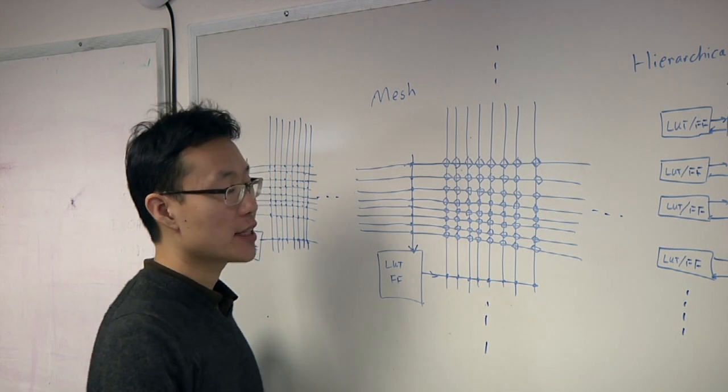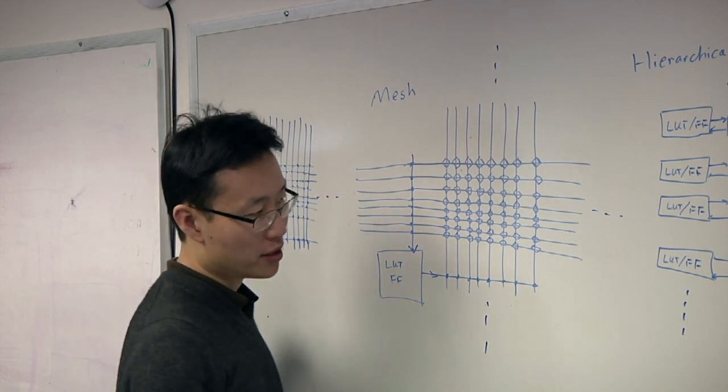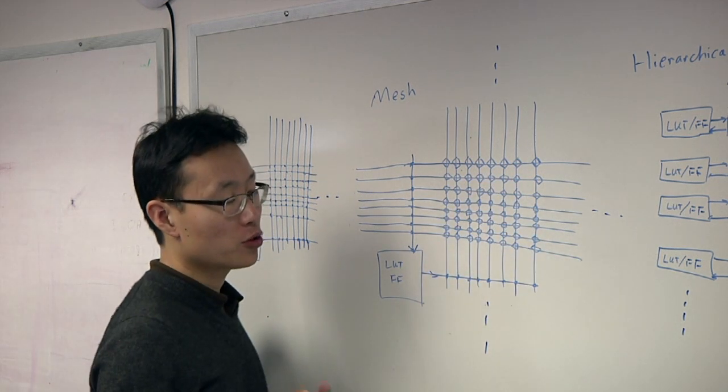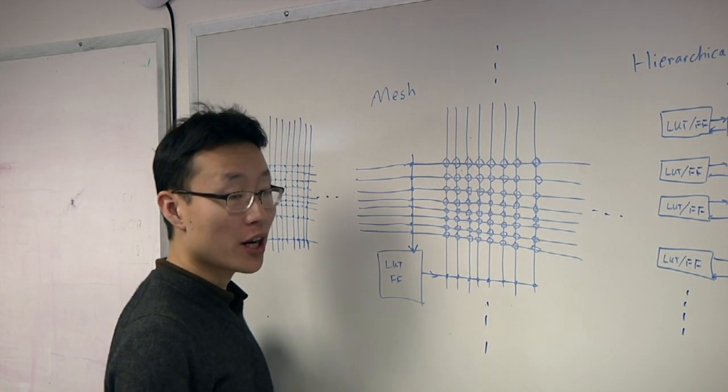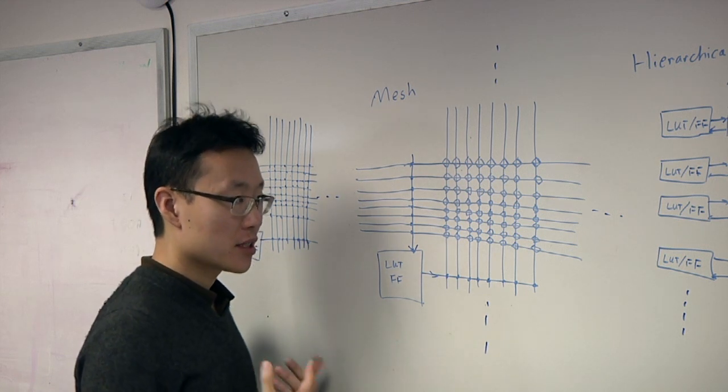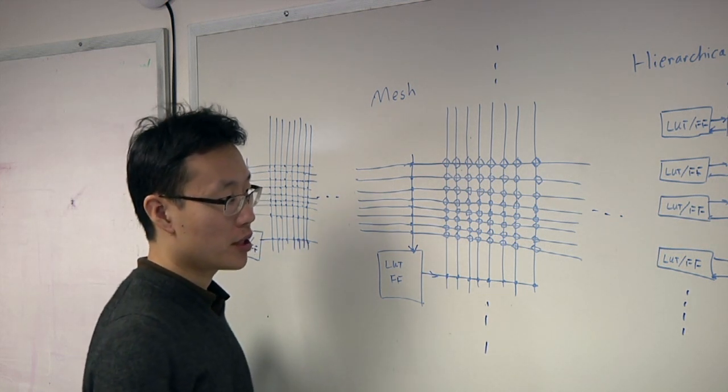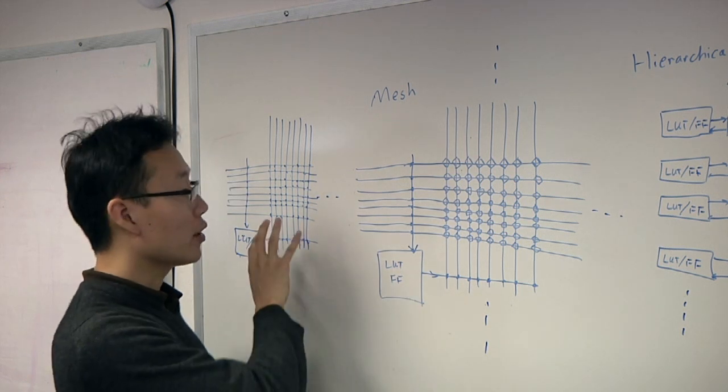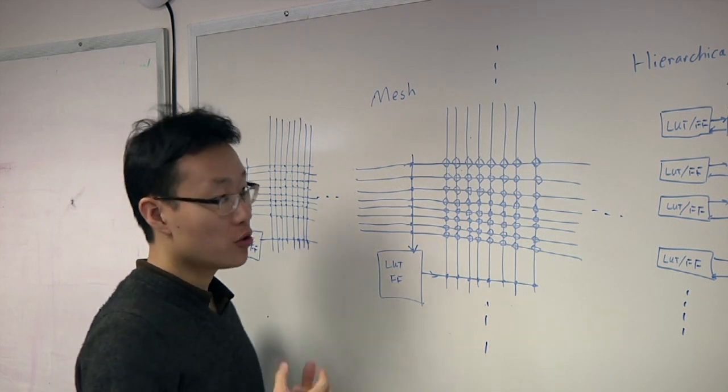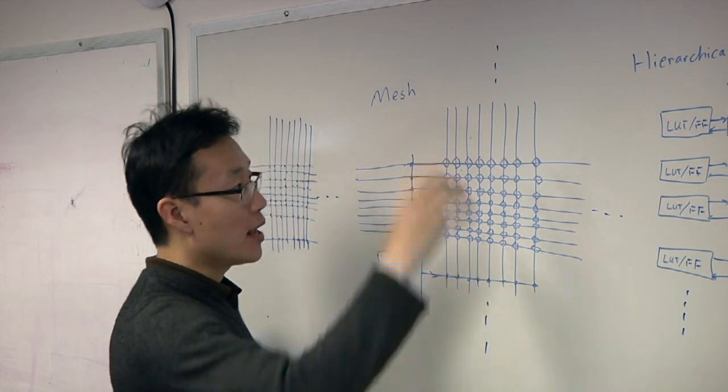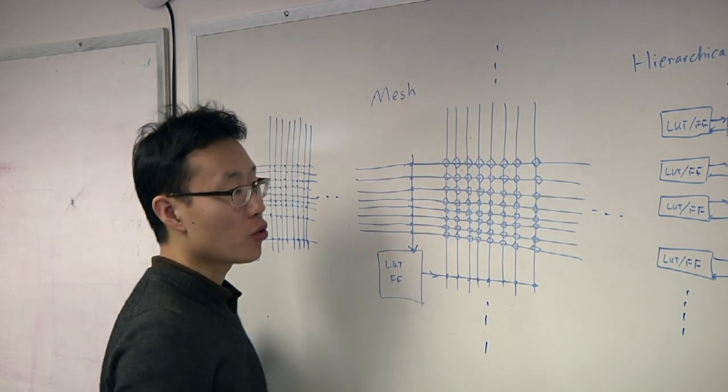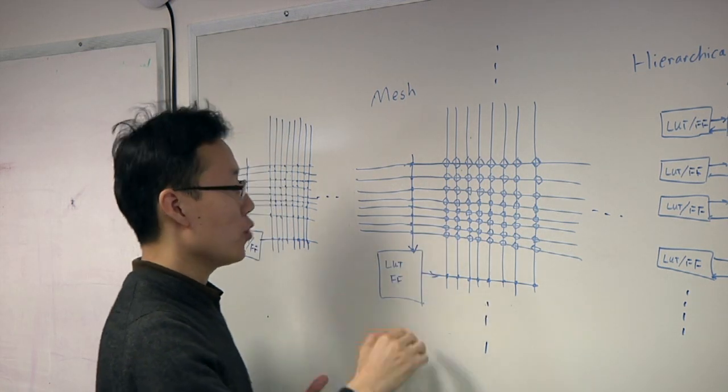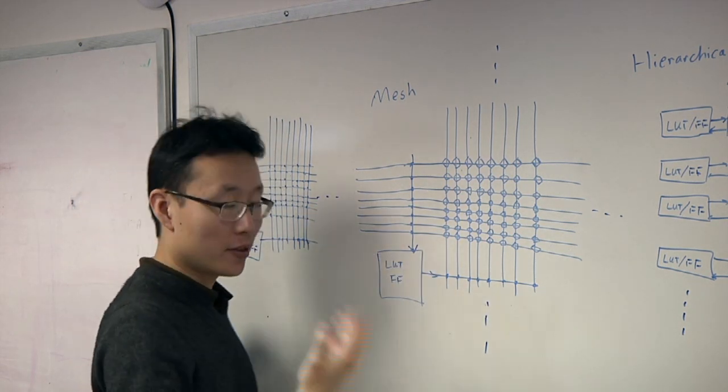Now, modern-day FPGAs have done a lot of depopulation, depopulation meaning reducing the number of these switches in order to get to a slightly lower area. However, the fundamental scaling of a mesh interconnect network is O to the N squared, which means for N number of LUT-FLOP combinations, you're going to need, in the worst case, N squared number of switches in order to fully route any LUT-FLOP's output signal to the input of any other LUT-FLOP.